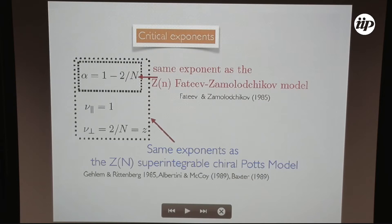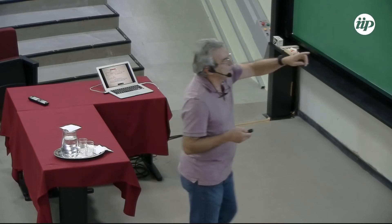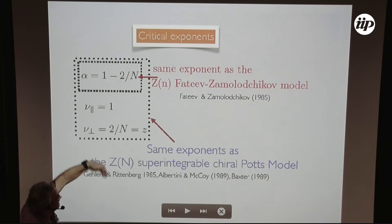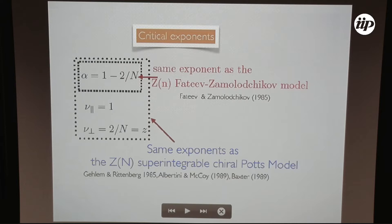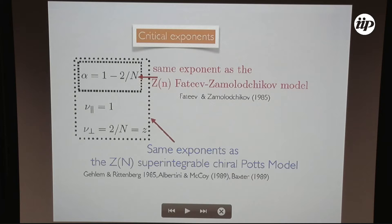This alpha exponent is the same as the interacting ZN Fateev-Zamolodchikov parafermionic model. But we also have the dynamic critical exponent nu_perp equal to 2/N, the same as the ZN superintegrable Chiral Potts model. The difference is that this free parafermion model is much simpler to solve and obtain the spectrum than the superintegrable Chiral Potts model.